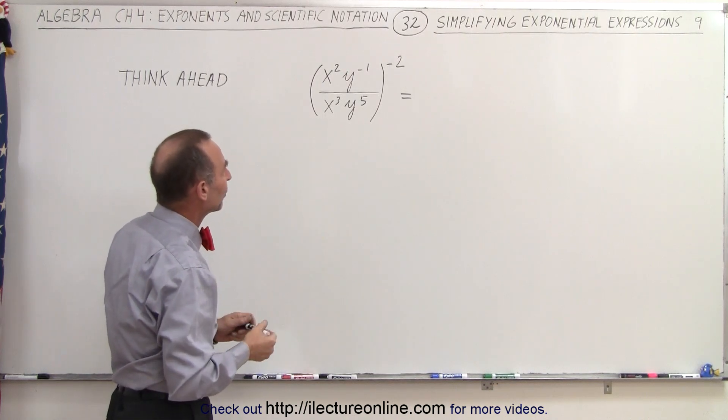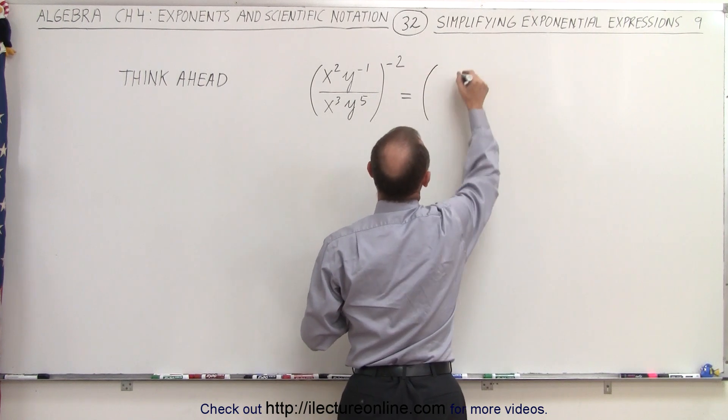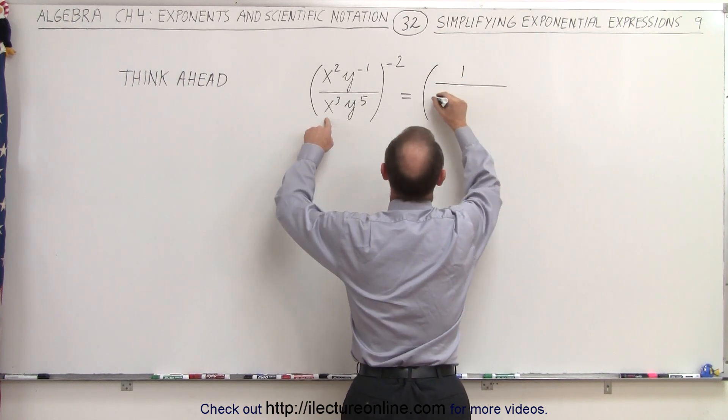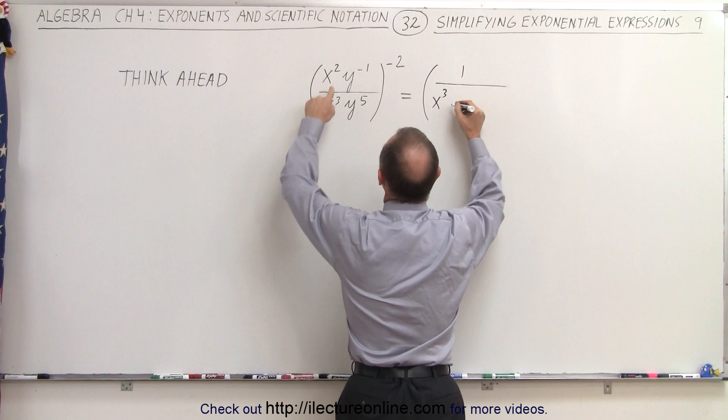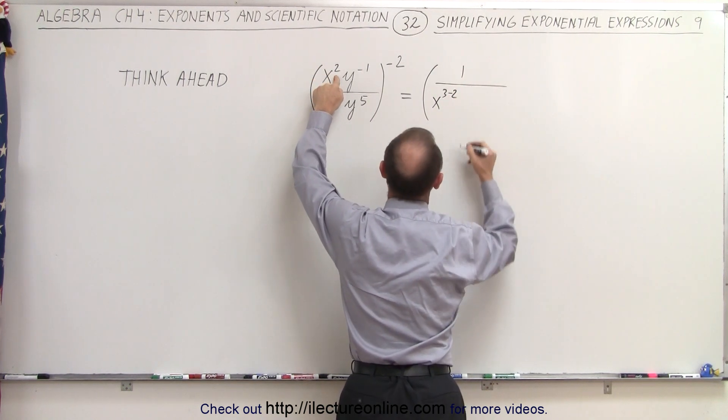So that simplifies things right away, so we're going to go ahead and do that. This becomes the same as 1 over x cubed minus 2 here, because when we bring this to the denominator, it becomes a negative 2 exponent.